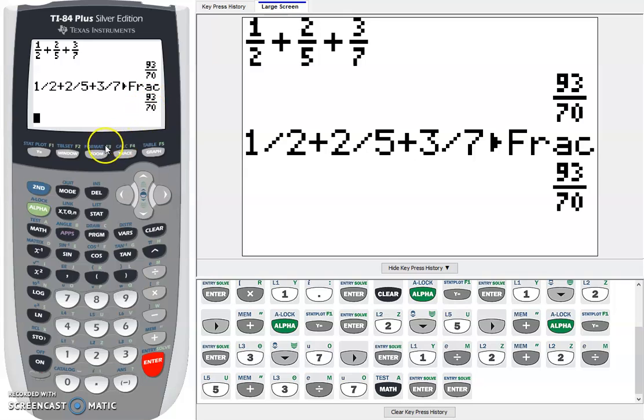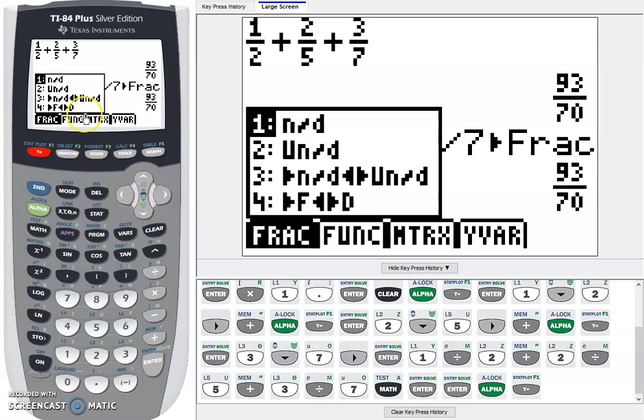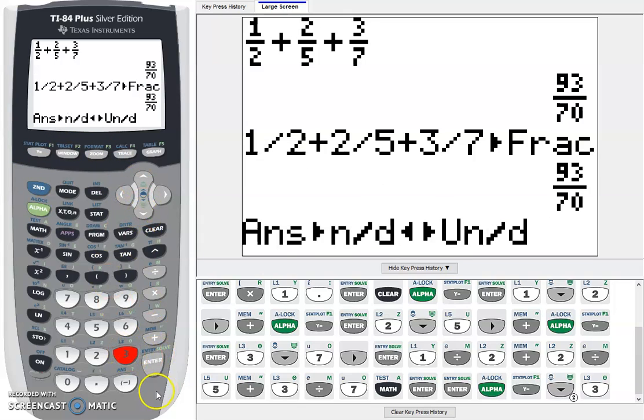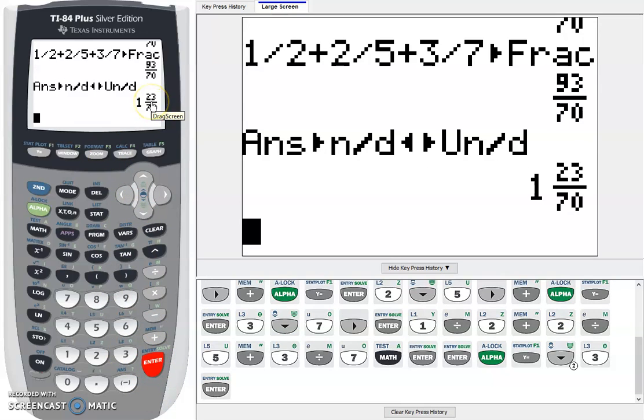And remember you can always change that back to a mixed fraction by going back alpha y equals. You go down to this function here, function 3. You can just click 3 and it actually works. Then press enter and we have a mixed fraction.